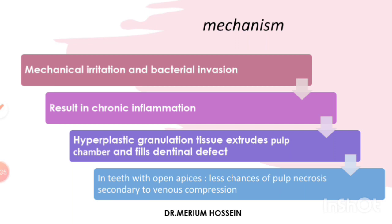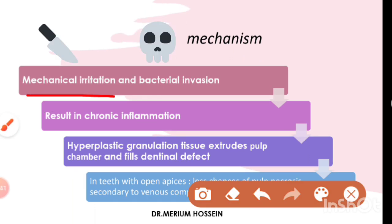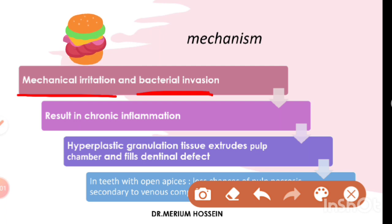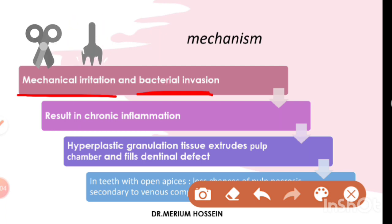Now let's talk about the mechanism by which this condition occurs. First, there is mechanical irritation and bacterial invasion. With an open cavitated molar and exposed pulp in the oral cavity, there is a lot of bacterial invasion into that area, and also mechanical irritation — perhaps due to food impaction or the patient irritating the pulp polyp with a toothpick or similar object.